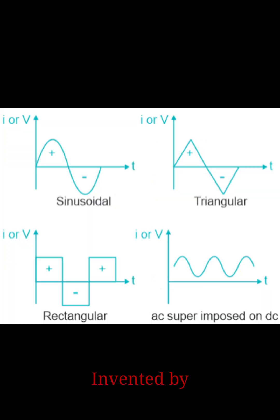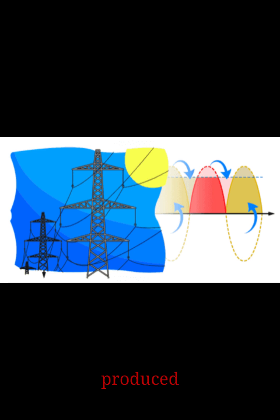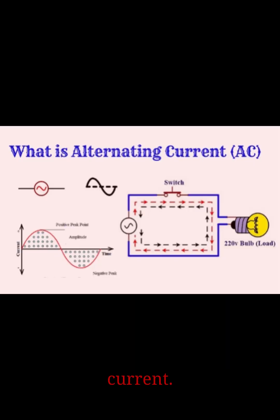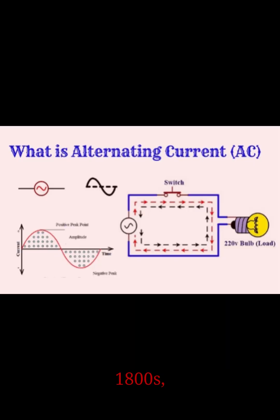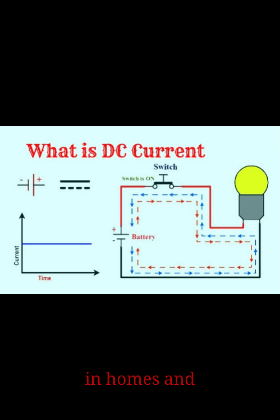DC was invented by Alessandro Volta in 1800, who created the voltaic pile — the first chemical battery — which produced direct current. Later, Thomas Edison in the late 1800s promoted DC for power distribution in homes and industries.